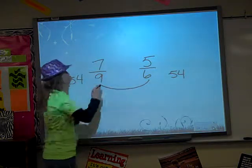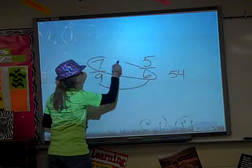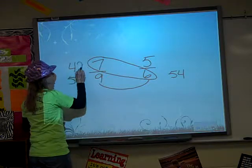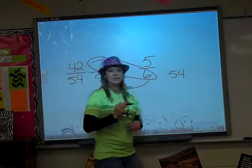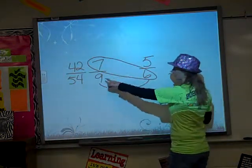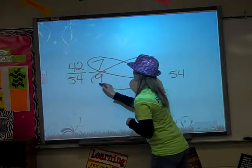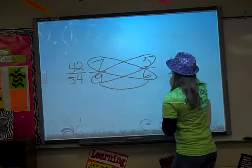And then I multiply the 9 times the 6, so I need to multiply the 7 times the 6, and 7 times 6 is 42, and on this side I multiply the 6 times the 9, so I need to do the 5 times the 9, and 5 times 9 is 45.